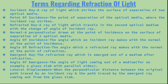The angle of incidence is the angle which the incident ray makes with the normal at the point of incidence. The angle of refraction is the angle which the refracted ray makes with the normal at the point of refraction.